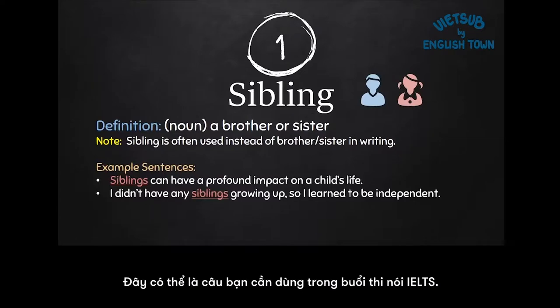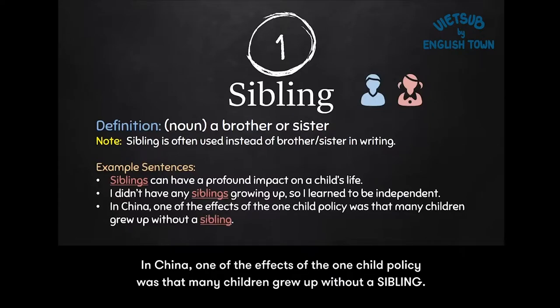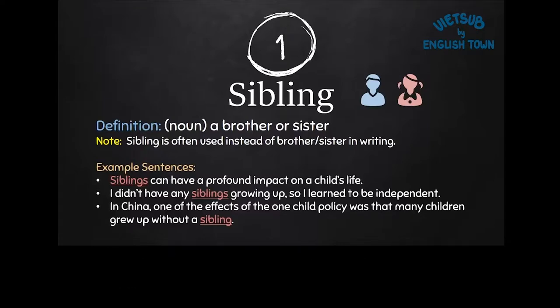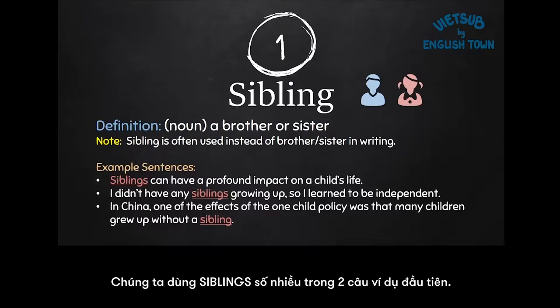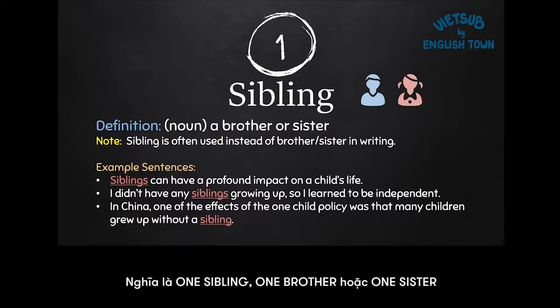This might be a sentence you say during an IELTS speaking interview. And last, in China, one of the effects of the one-child policy was that many children grew up without a sibling. So we use siblings with an S in the first two sentences, but we can also use it like in the last sentence with a, meaning one sibling — one brother or one sister.